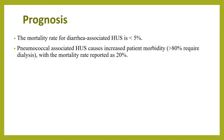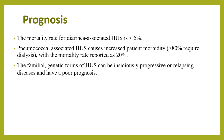When we see the prognosis, the mortality rate for diarrhea-associated HUS is less than 5% in best-setup centers with good care. Pneumococcal-associated HUS causes increased patient morbidity, with more than 80% requiring dialysis and a mortality rate approaching up to 20%. The familial or genetic forms of HUS can be insidiously progressive or relapsing and have a poorer prognosis. Please don't forget to subscribe. Thank you.